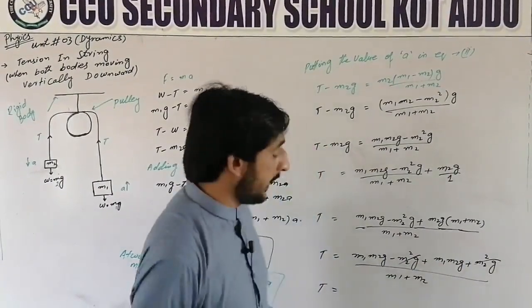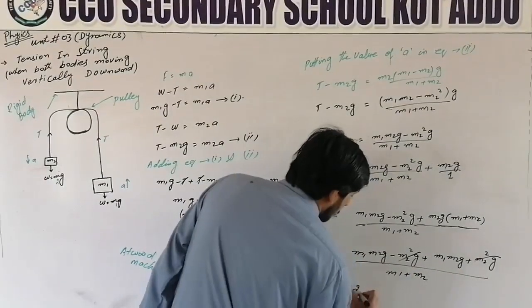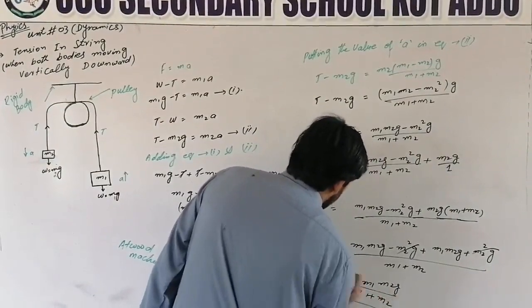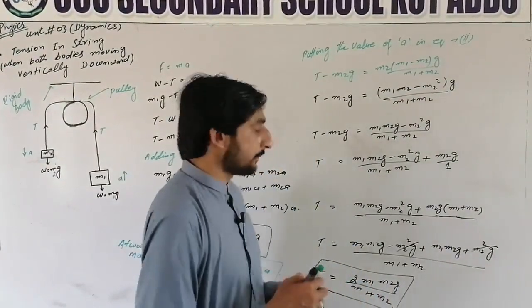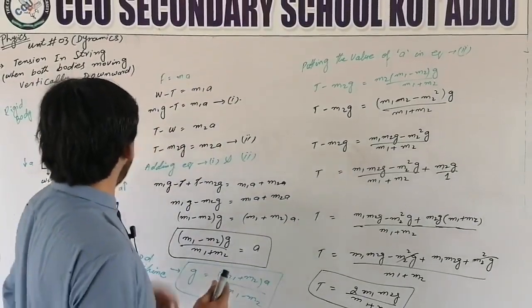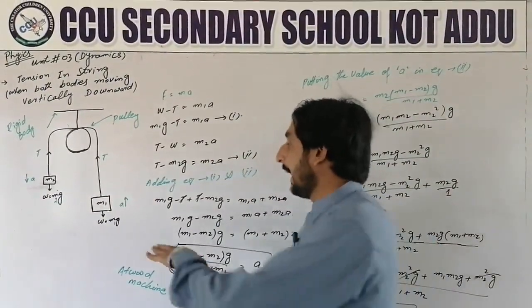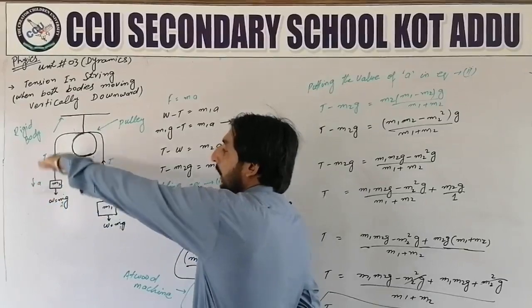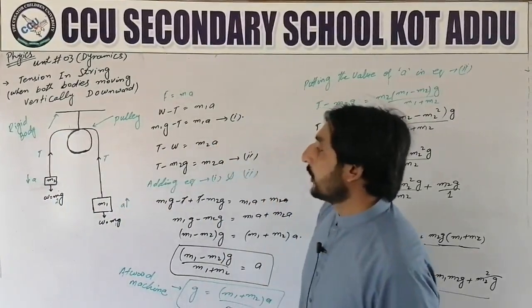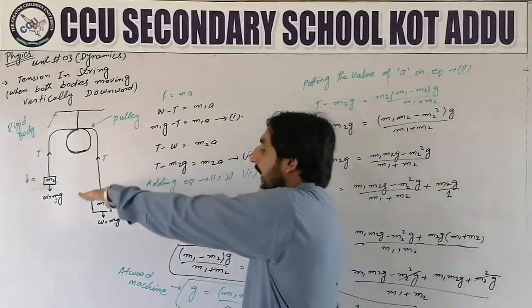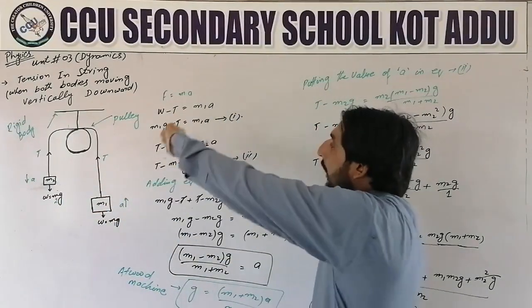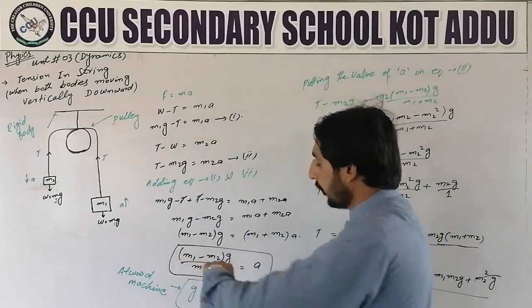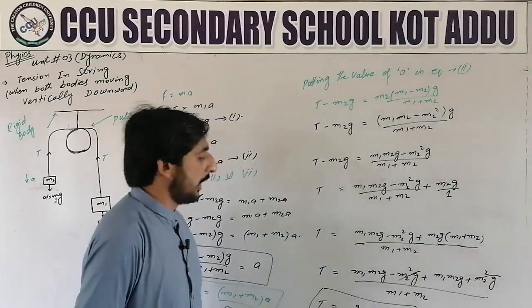The formula to find tension is T = 2m1m2g / (m1 plus m2). We have a pulley with two masses — m1 and m2 — hanging from it. When m1 is greater, it moves vertically downward and m2 moves upward, producing tension and acceleration. Using F = ma, we derived the acceleration formula (Atwood machine) and then found the tension formula. Thank you.